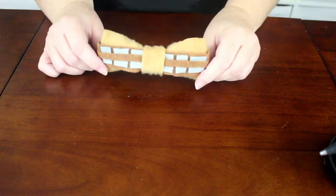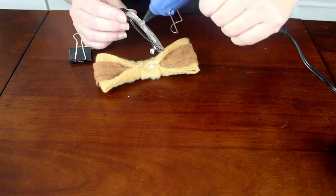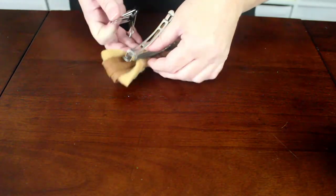Next, use a generous amount of hot glue to attach the barrette on the back of the bow. And use the binder clip to hold it in place until the glue cools and hardens again.